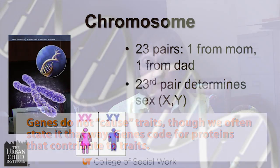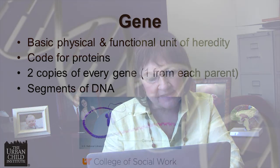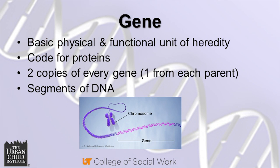You have 23 pairs of chromosomes. Each pair contains one from mom and one from dad. The 23rd pair determines sex. The recombination tends to be random — so even if you have six girls, those were random tosses of the dice. Genes are the basic physical and functional units of heredity. They code for those four proteins. You have two copies of every gene, one from each parent, and genes make up the little segments of the DNA material in your cells.